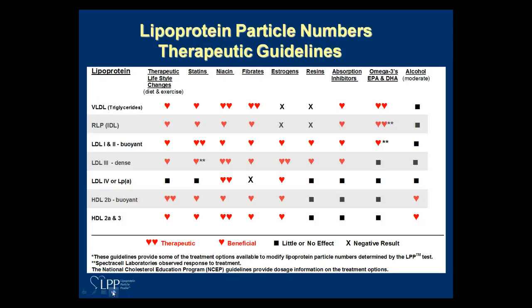What do you do to treat patients with different subgroup abnormalities? For RLP, omega-3 fatty acids are a really good choice. For large LDL, statins work great, as does niacin. For small LDL, niacin is excellent. For LP little a, niacin is excellent — and note that fibrates now have an X there. For raising HDL2b, lifestyle changes and exercise are probably the best. For HDL in general, niacin is an excellent therapy. Notice that niacin is a therapy for almost everything — it works very well across the board.